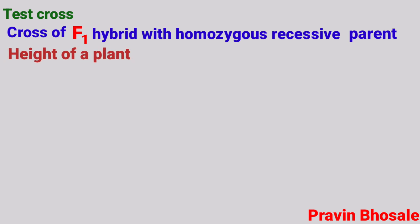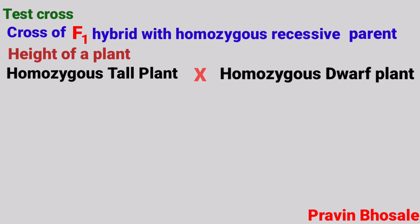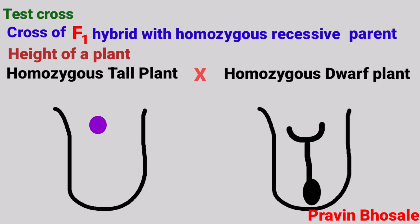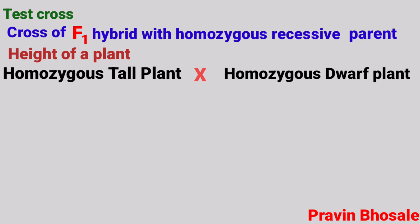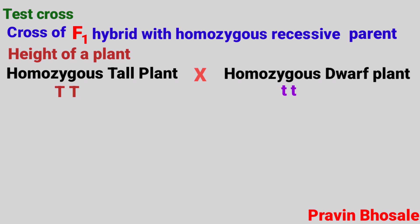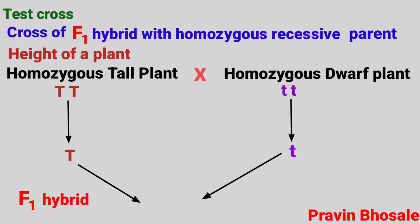Let's consider the height of a plant. When a homozygous tall plant is crossed with a homozygous dwarf plant — crossing means we take the pollen grains of a flower of a tall plant and transfer it on the stigma of the flower of a dwarf plant, or vice versa. In case of the homozygous tall plant, genotype will be capital T, capital T. And for the homozygous dwarf plant, genotype will be small t, small t. Gamete formation here will be capital T; here, small t. And the F1 hybrid will be capital T, small t.